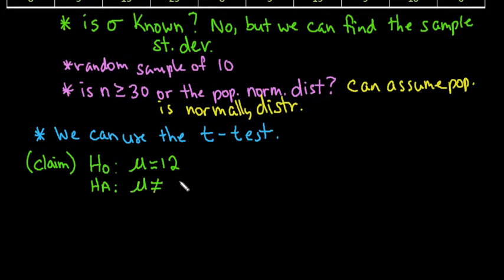So our alternative would be that mu is not equal to 12. When you go to draw your picture you know that you need to shade both tails since this is a two-tail test. The type of test whether it's left tail, right tail, or a two-tail always depends on the alternative hypothesis and since the alternative hypothesis is not equal that means that we are going to be running a two-tail test.